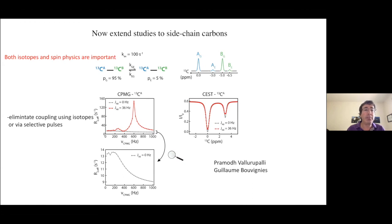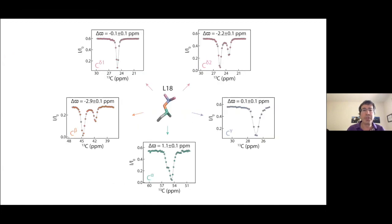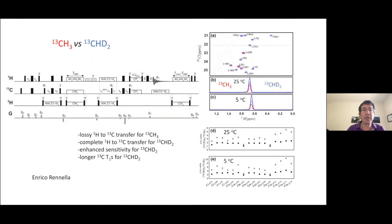So we have a CPMG experiment that simply won't work if we have uniform C13 labeling. Of course, we can eliminate some of the couplings through isotopes or via selective pulses in some cases. But we can also do this CEST experiment where we use very, very weak magnetic fields. And so the scalar coupling really doesn't manifest and we can get the detailed information. So an important take home from this is that isotopes are critical, but so is the spin physics. And that allows us, for example, to look at the side chains of a protein and to get out the excited state chemical shifts of the C betas, the C alphas, the C deltas, and so forth in leucine 18 of this protein that exchanges between the ground and excited state.